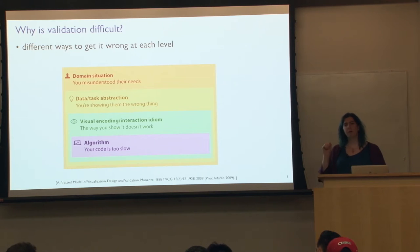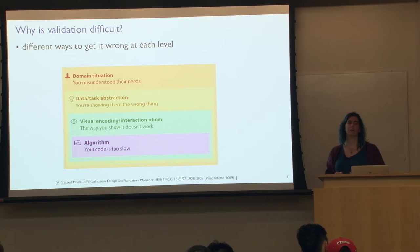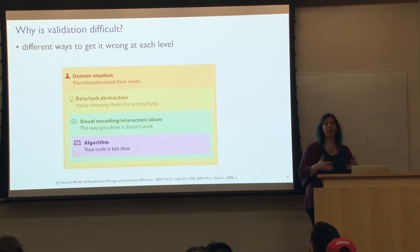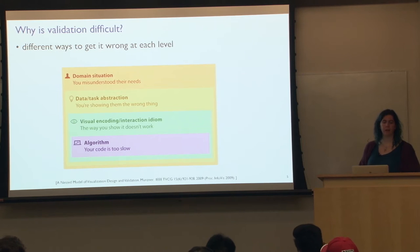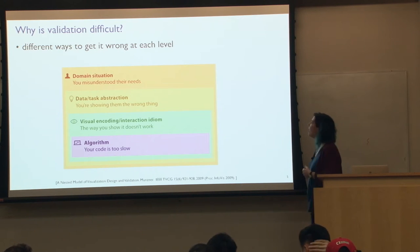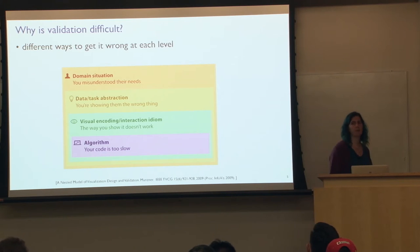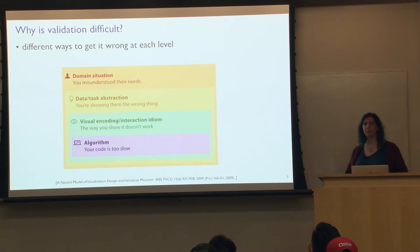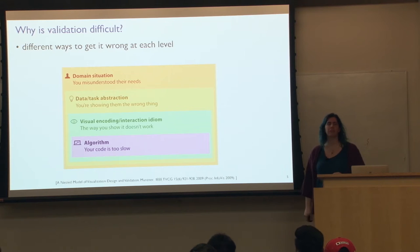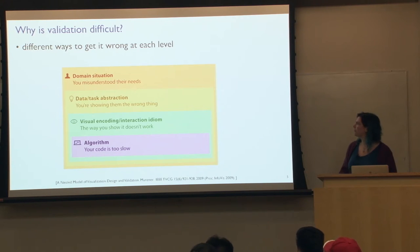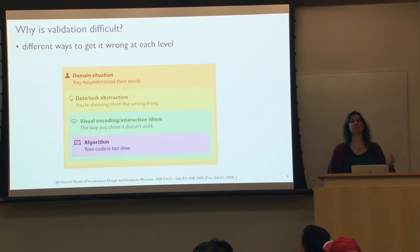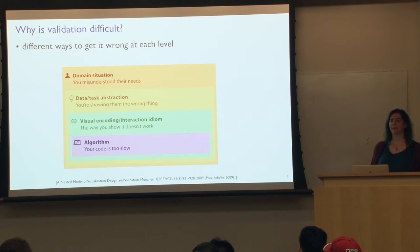The most perfect visual encoding of the wrong abstraction will not help the user. At the idiom level, the way you show it might not work — all kinds of issues about the human perceptual system come into play. We have to take into account that aspects of how humans see data are inconvenient for the designer: the brain is not a perfect memory store and the visual system doesn't have the same characteristics as a camera. At the algorithm level, you could have a terrible algorithm — code that runs slowly or doesn't scale up.